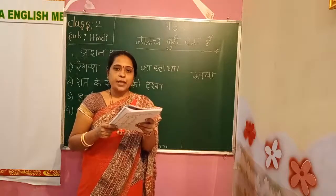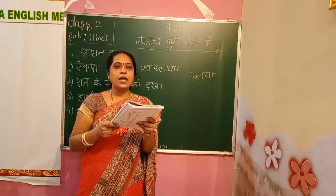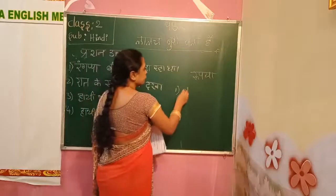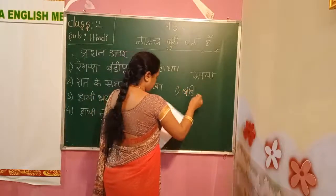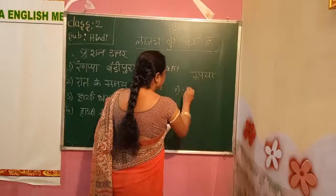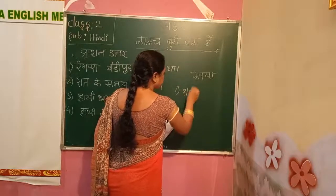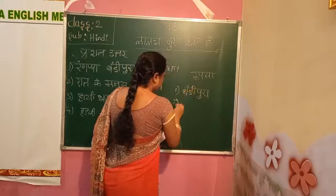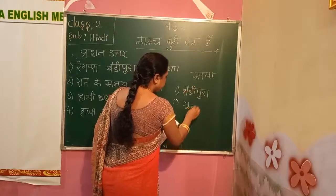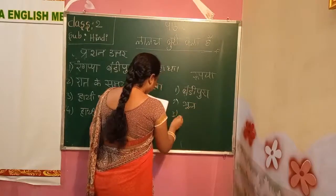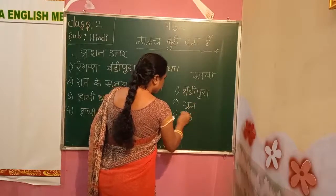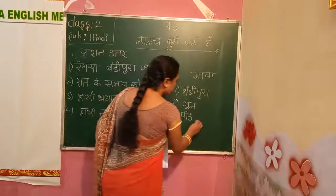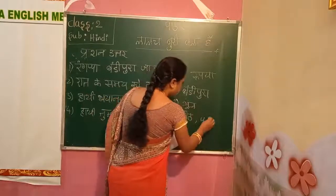Bandi pura. Raat ke samayi raastah bhool gaya. First one bandi pura. Next one. Third one bandi pita. Fourth one — third one bandi ze dho hai, yahaan par pahuncha ya.